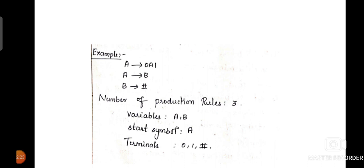Now we are going to see one grammar example. A tends to 0A1, A tends to B, B tends to hash. This is the production rule for one grammar. Here in this grammar, we have three production rules. The non-terminals are capital letters A and B — we have two non-terminals. Non-terminals are otherwise called as variables. The starting non-terminal is capital letter A. The terminal symbols are 0, 1, and hash. Special characters can also be considered along with the terminal symbols and used for derivation.